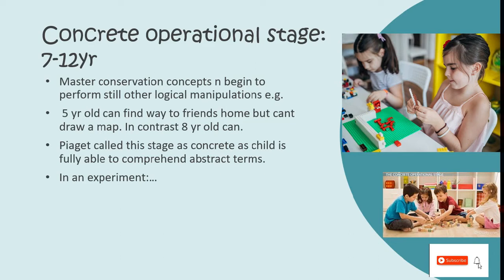Children can order objects on the basis of dimensions such as height and weight. For example, if a child wants a ball, he would describe it as having no corners. If he wants a triangle, he would say it has three corners. And if he is asking for a rectangle, he would say it is a bit long with four corners.